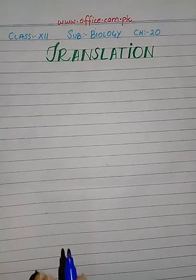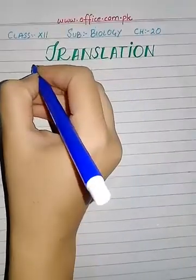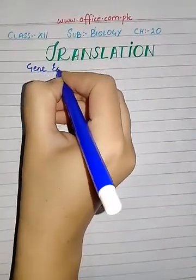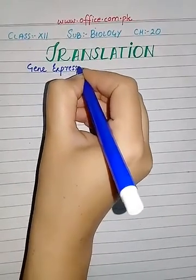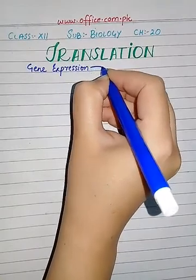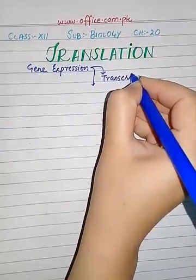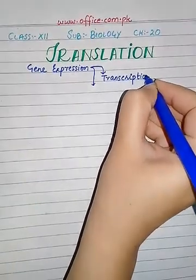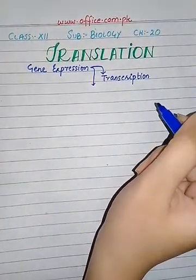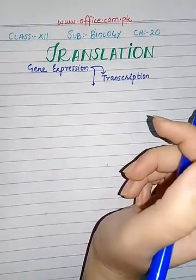As you can see, today's topic is translation. We have studied transcription in the previous video, and we also discussed the genetic code which exists as codons — a codon is basically a combination of three nucleotides. We are studying gene expression, which is divided into two steps. The first step was transcription; you can see the previous videos — transcription is uploaded in three parts. The second step is translation.